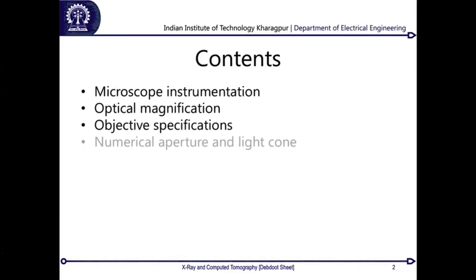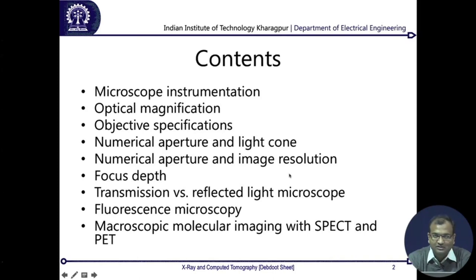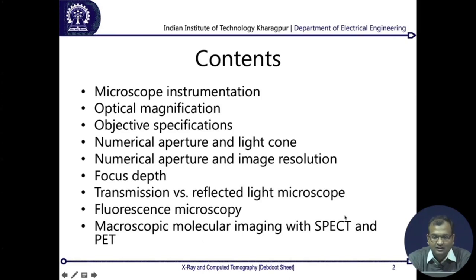This lecture is arranged as follows: I will introduce microscope instrumentation and the concepts of optical magnification, what an objective is and its specifications, the relation between numerical aperture and light cone, image resolution, and depth of focus. From there, two modes of microscopy — transmission and reflected light microscopy. Reflected light microscopy is used in fluorescence microscopy, which is where molecular imaging is introduced for the first time, and from there we move to molecular imaging on the macroscopic scale with SPECT and PET.